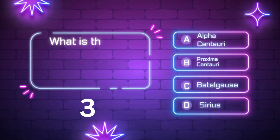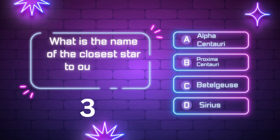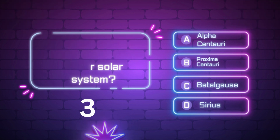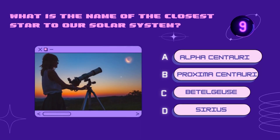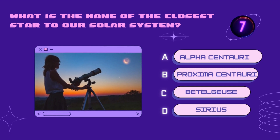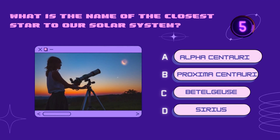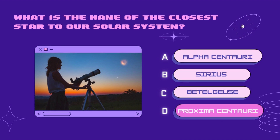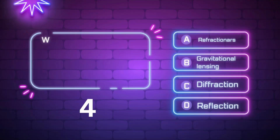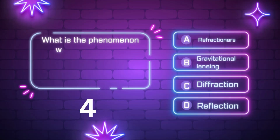What is the name of the closest star to our solar system? Alpha Centauri, Proxima Centauri, Betelgeuse, Sirius. Your time starts now. Right answer is Proxima Centauri.